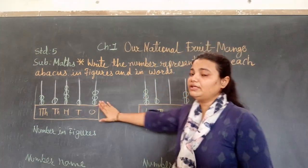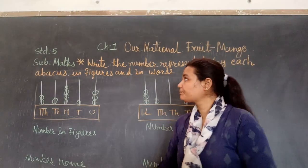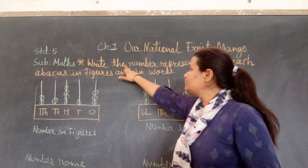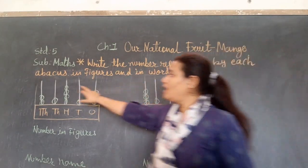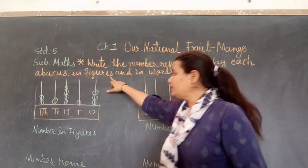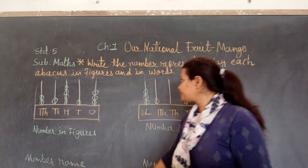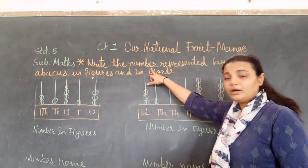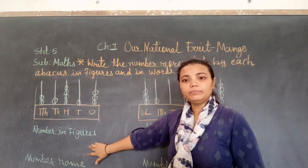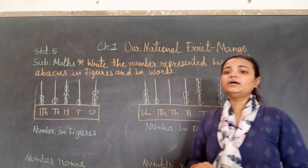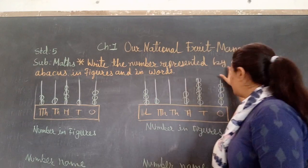Here I have 2 figures. Let's have a look at the question: write the number represented by each Abacus in figures and in words. What does it mean? Write the number — you can see the figure here. I have a number, and the number is also to be written.